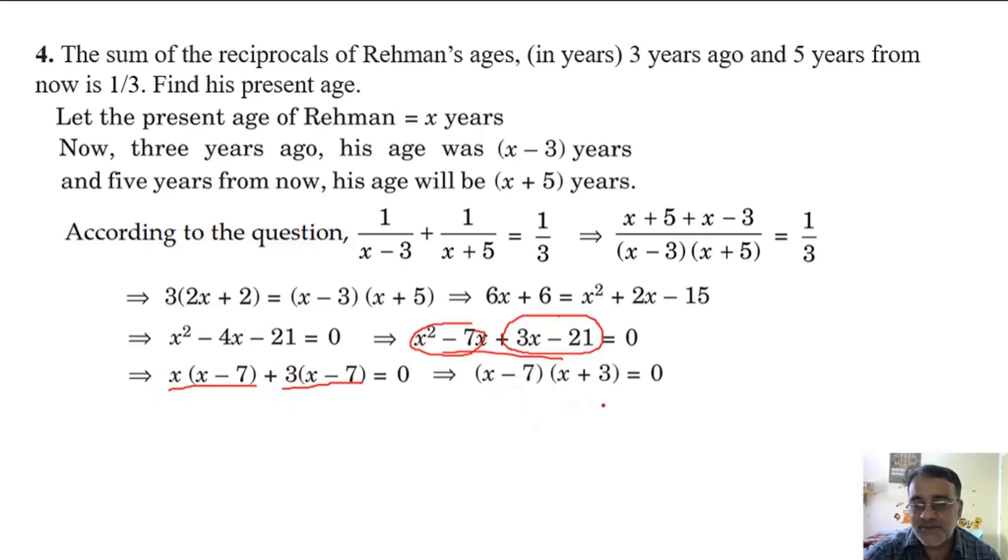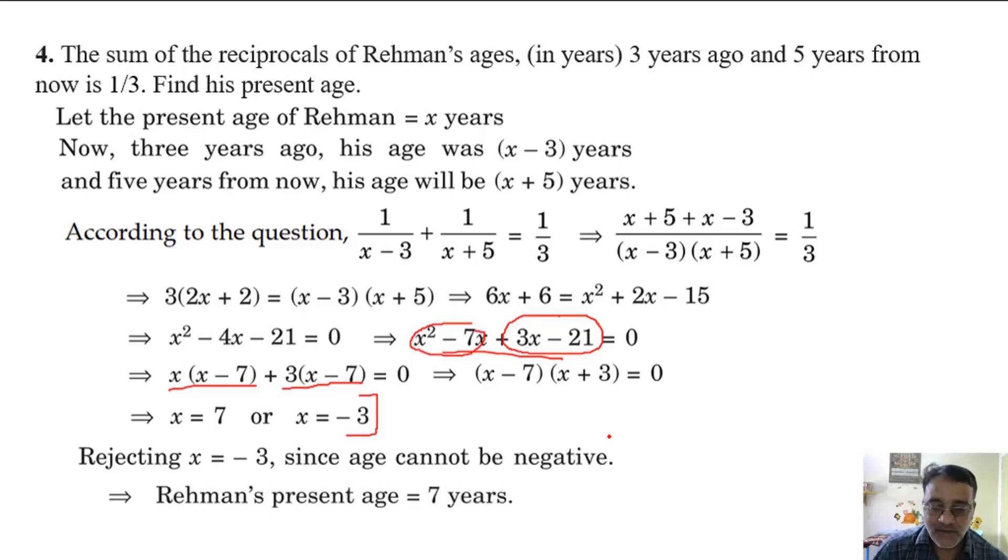So either x minus 7 equals 0 or x plus 3 equals 0. We will get two answers, 7 and minus 3. Now here we have to neglect minus 3. Why? Because age cannot be negative. Rejecting x equals minus 3 since age cannot be negative. So that will imply Rahman's present age equals 7 years.